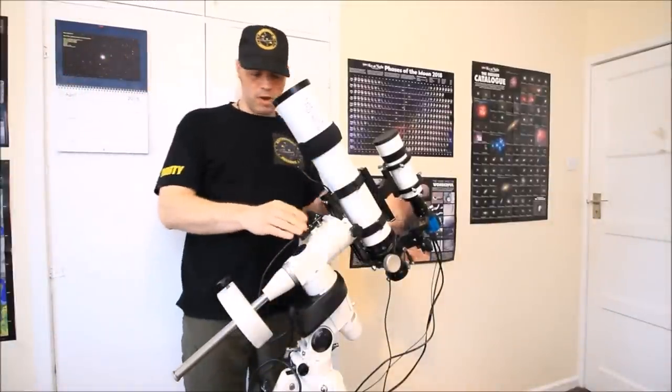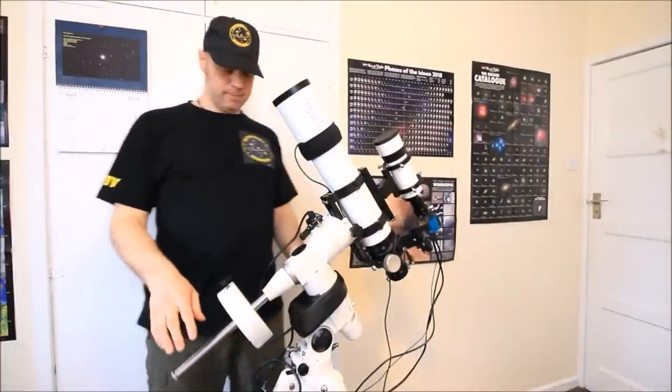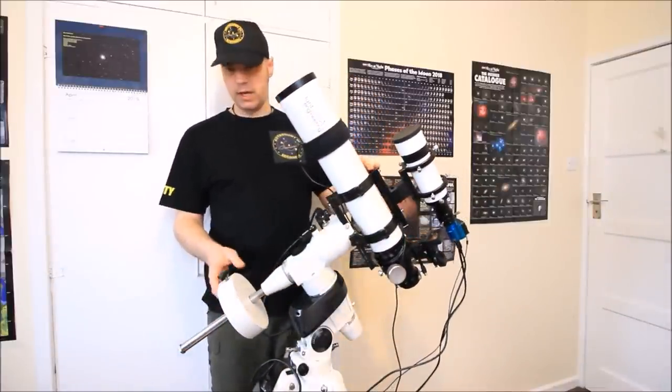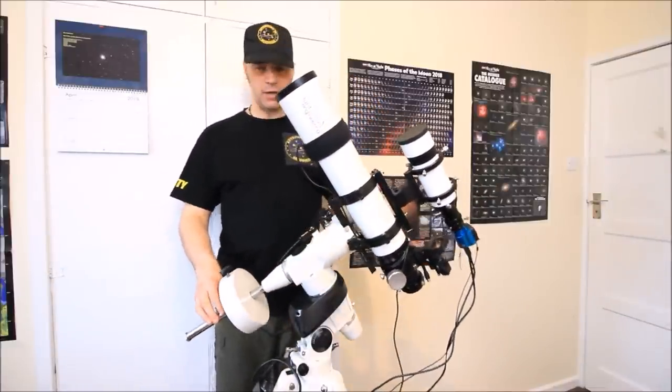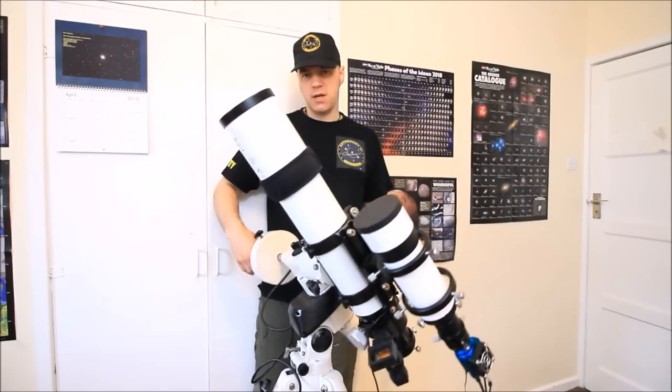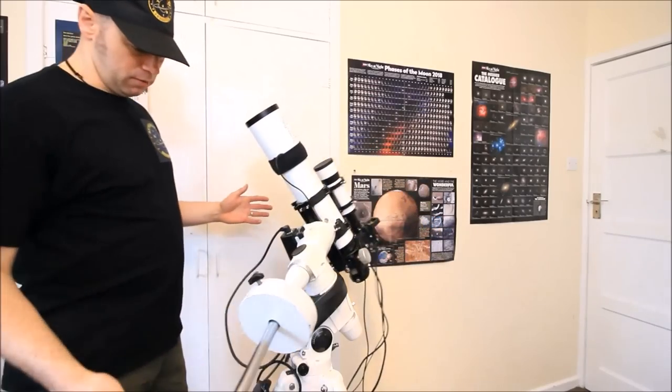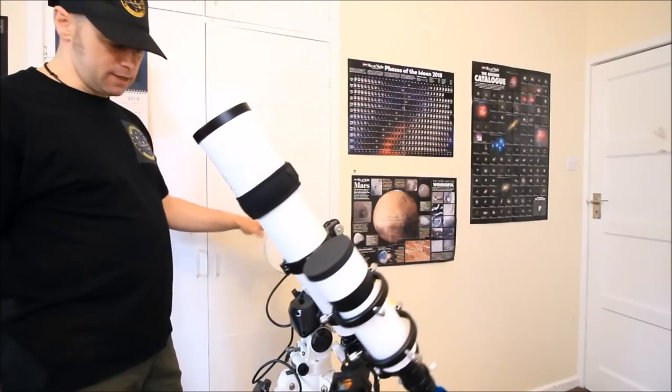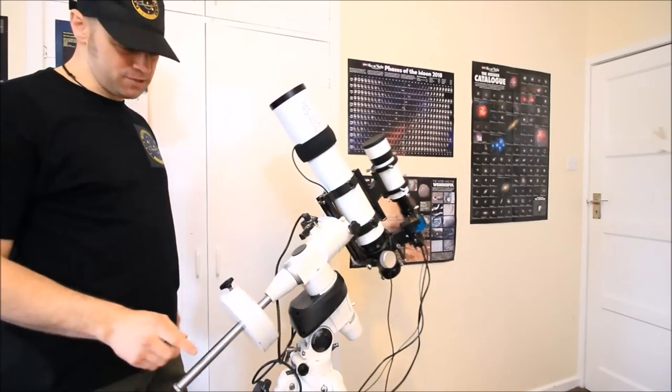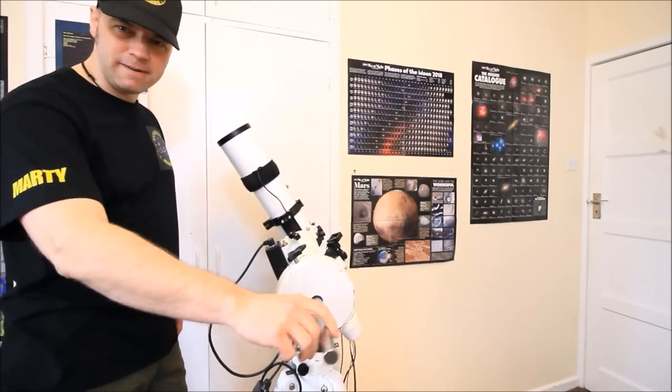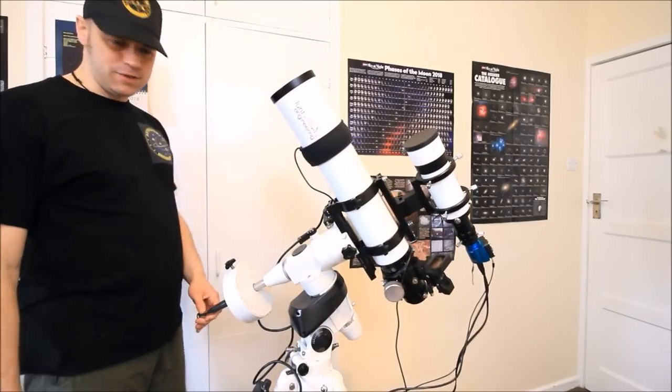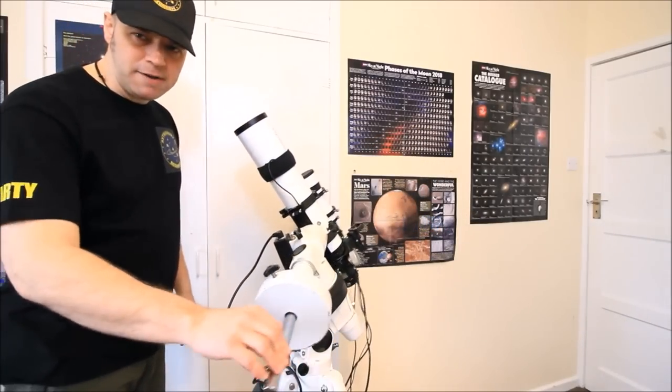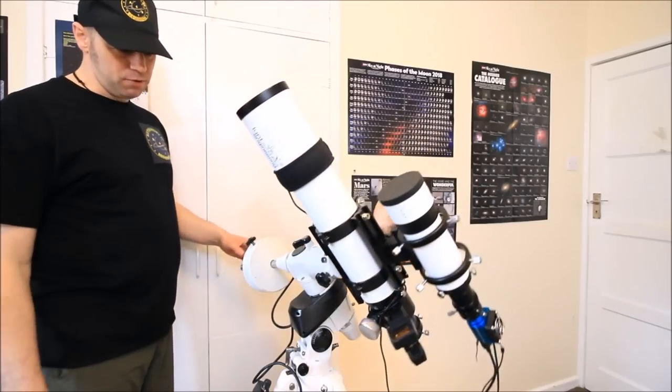So the first problem I've got with this mount is this. Now like you see this is balanced, the counterweight balance and the telescope is all balanced and it does feel smooth. But look at it in the RA axis. It's okay but it's not brilliant, there's a lot of binding. There's a lot of friction there and there seems to be a lot of binding in the bearings. So that's the first problem I've got.